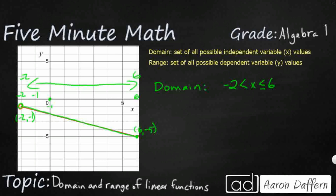Then I'm going to do the same thing for my range, looking from bottom to top. y is greater than or equal to negative 5 — the closed circle at the bottom. And then it is greater than negative 1, since that's the open circle at the top. We can also write these in words.